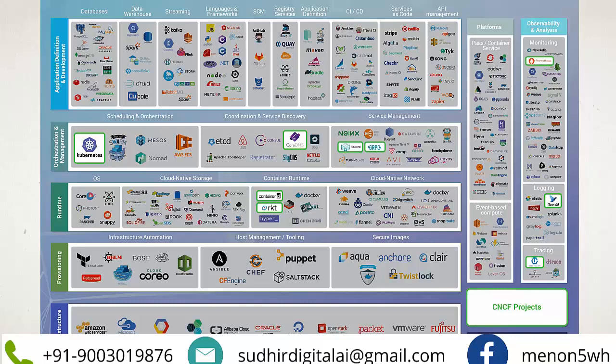For CI/CD, standardization is key — whether using Jenkins, Bamboo, Drone, or Codeship. For services as code, tools like SendGrid and Shopify integrations exist. For API management, tools like MuleSoft and Zapier are used. The key message is to understand the high-level building blocks: infrastructure, provisioning, runtime, orchestration, and application. On the right-hand side, you have platform options like Docker or Convox, and observability tools for monitoring, logging (Elastic, Splunk, Fluentd), event-based compute, and tracing.